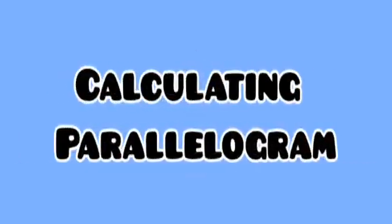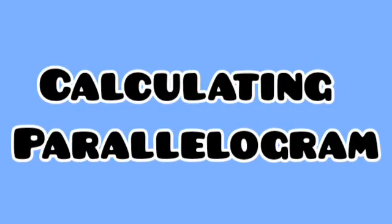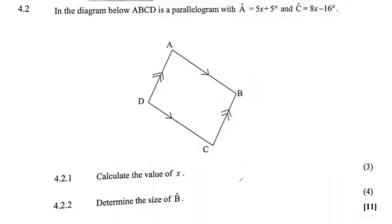Moving on, we are now calculating angles in a parallelogram. Question 4.2 says: in the diagram below, ABCD is a parallelogram — so we don't need to prove it, they've told us it is. Angle A equals 5x plus 5 degrees and angle C equals 8x minus 16 degrees. Question 4.2.1 asks us to calculate the value of x. We know that in a parallelogram, opposite angles are equal, so angle A equals angle C.